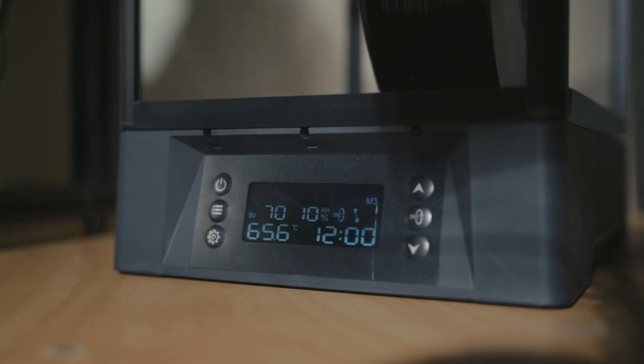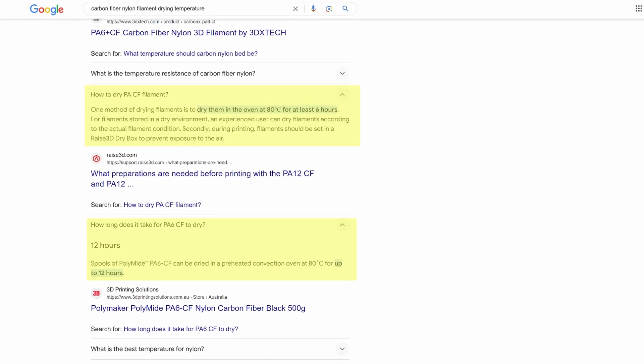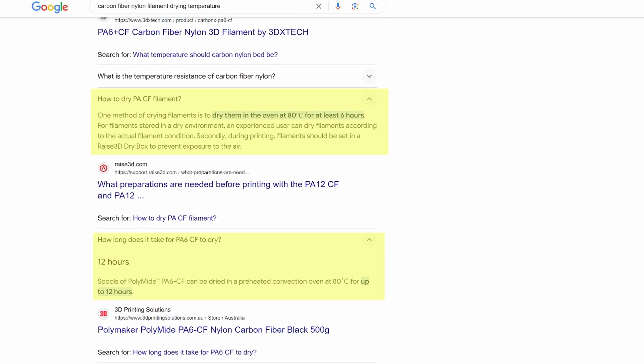Let's move on to the temperature ranges. With a 70 degree maximum, you can dry pretty much all hobbyist filaments, but it's a little bit less than the recommended temps for some carbon fiber composites.